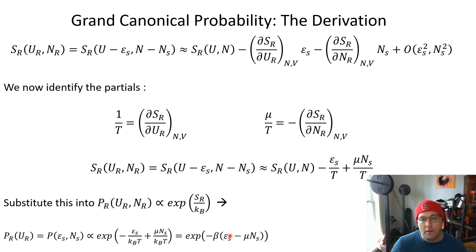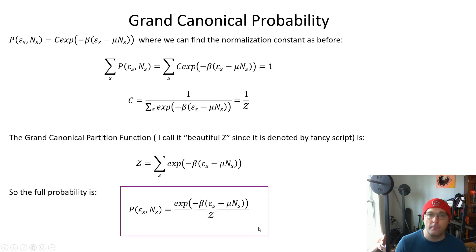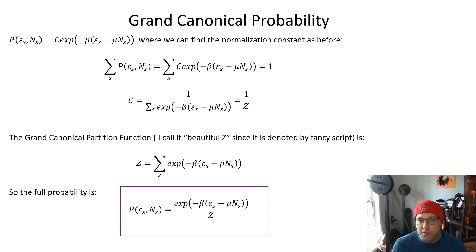This should be easy to remember: chemical potential has units of energy, so within the nested parentheses, an energy unit minus an energy unit is a legitimate subtraction. We can get the normalization of that probability by simply demanding that all the probabilities sum to one.